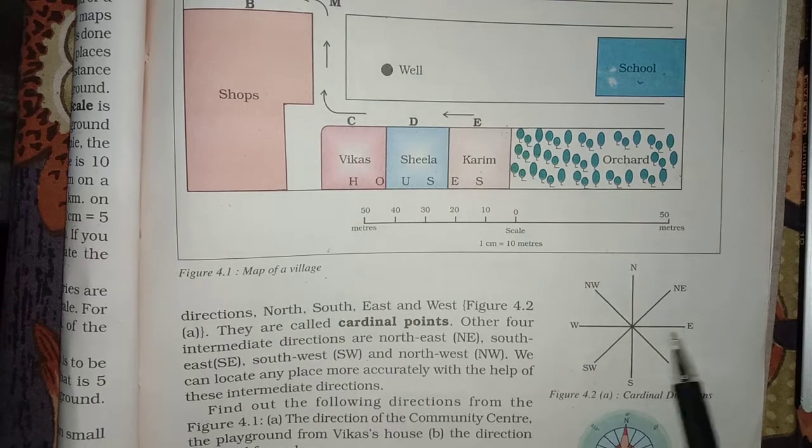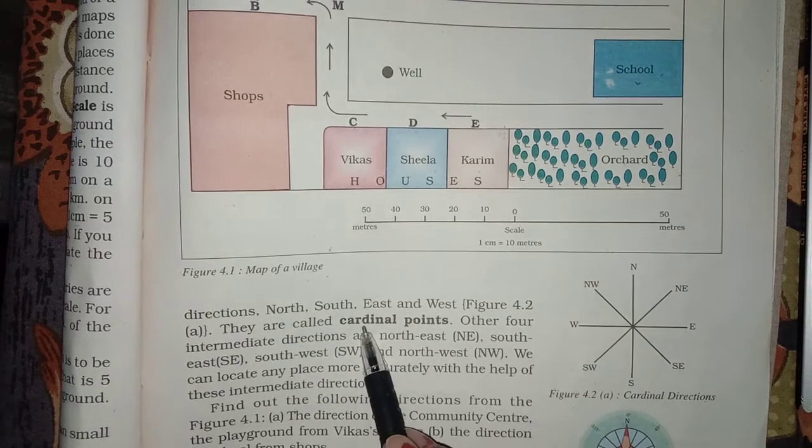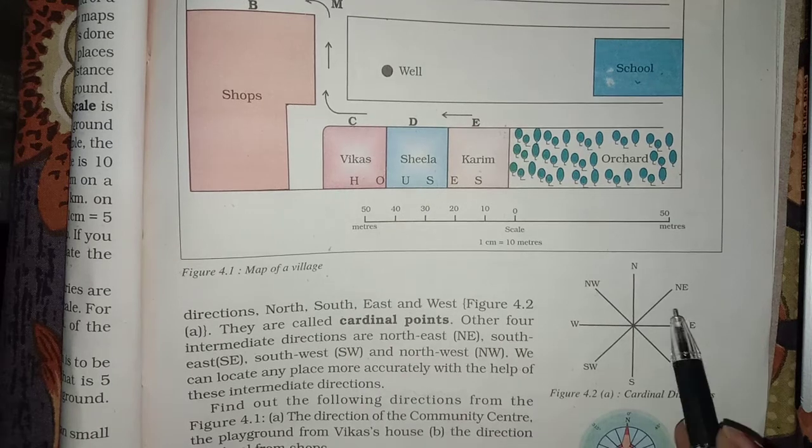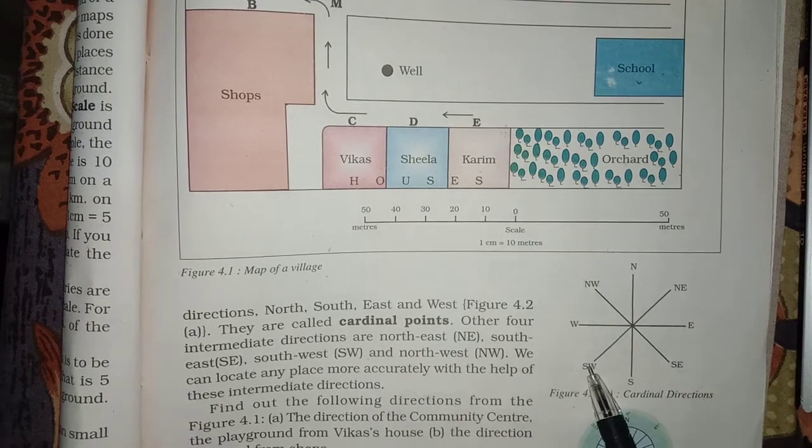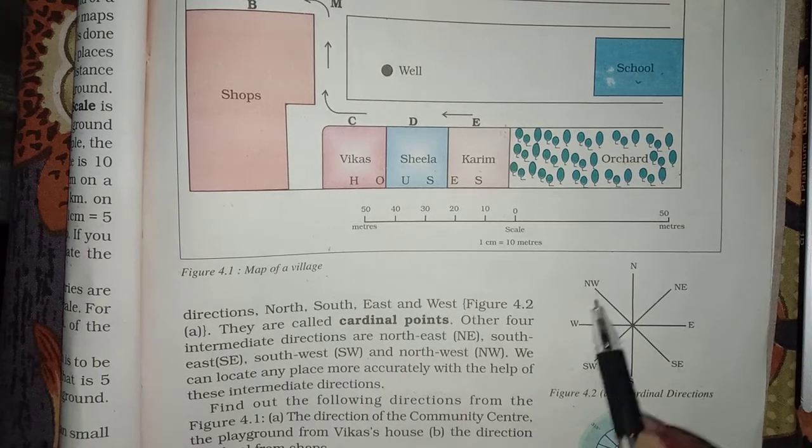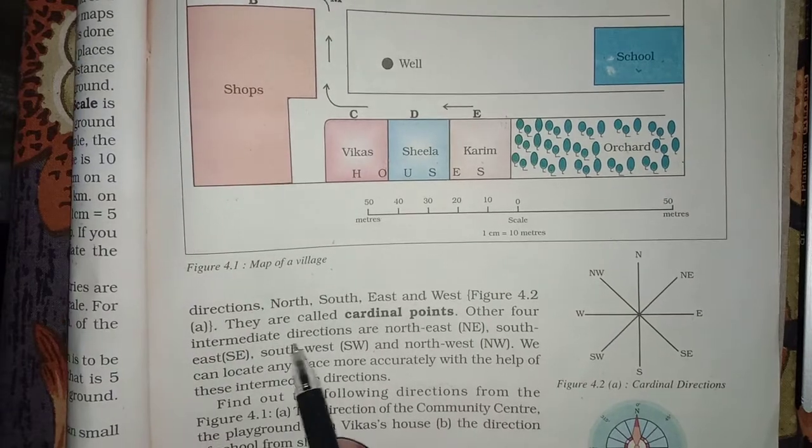North, South, East, West are cardinal points. And these North East, South West, South East, North West are intermediate directions.